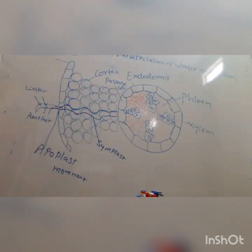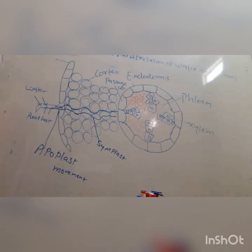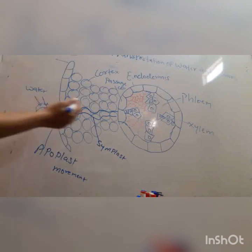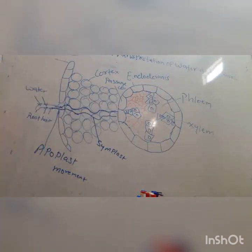In most cases, the movement of water is apoplastic type. But water can move in both ways — either it can be symplastic or apoplastic movement. Water will ultimately come towards the endodermis.